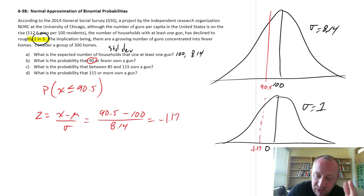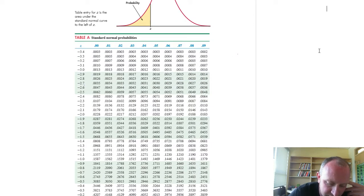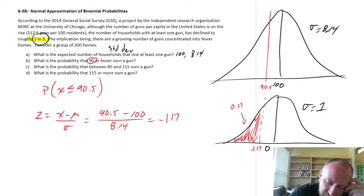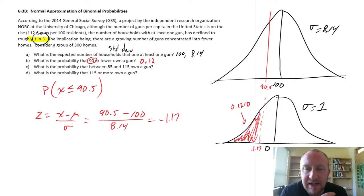So here's negative 1.17. And so that probability, that they own 90 of those households, or fewer own a gun, that would be this area to the left. And so if we pull up our tables, I'm looking at negative 1.17. So here's negative 1.17, right? This z is negative 1.17. Here I've got first that negative 1.1, and then here's that second decimal, 0.07. And where those come together, I have a value of 0.1210. So that area there, 0.1210. So that's the probability equal to, let's say about 12% chance, that 90 or fewer own a gun. There we go. That's all there is to it.